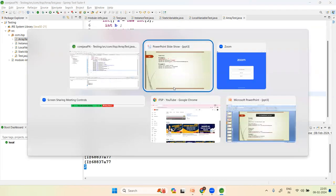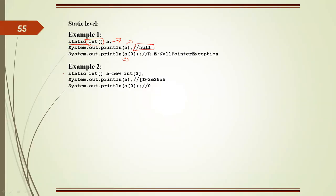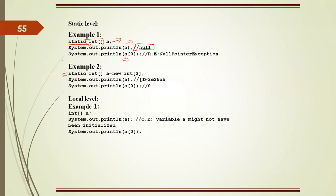Good, up to this it is clear. Now let's move to example two — the local level array. You can declare an int array inside a method block or inside a constructor.